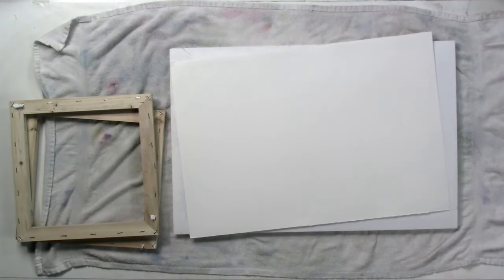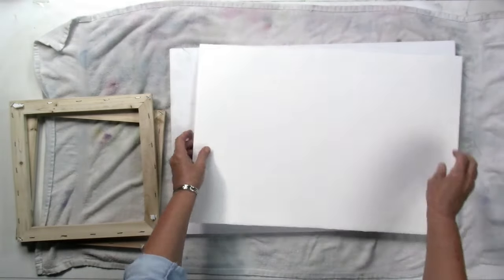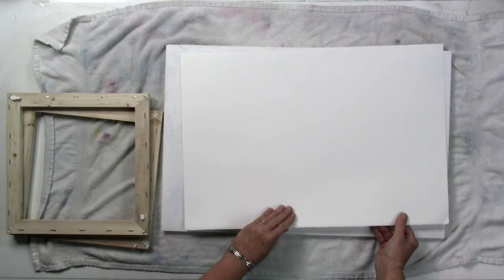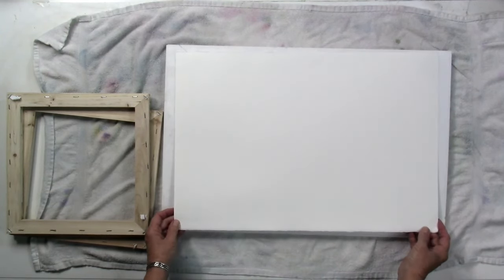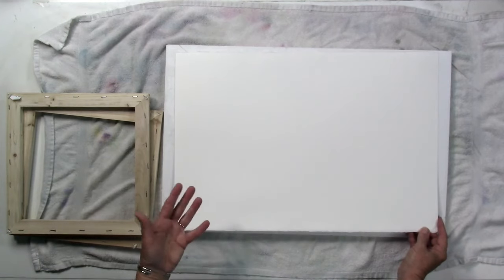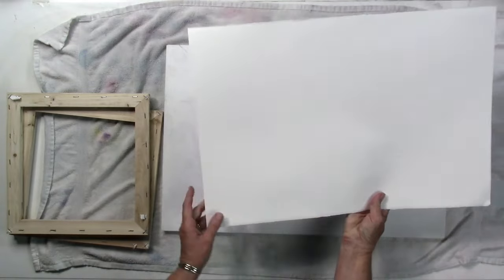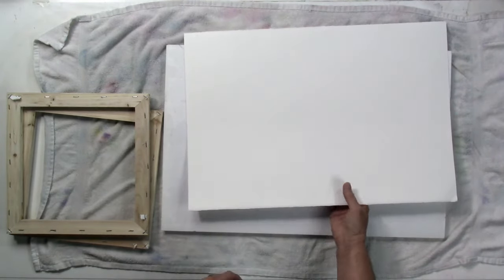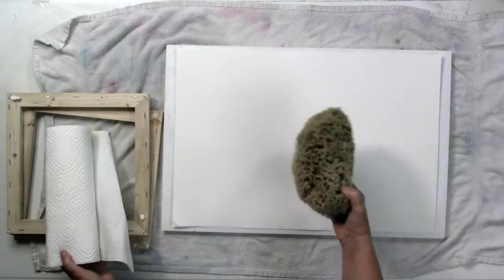I'll put my watercolor paper on top. Now this is 140-pound Fabriano paper, and I wanted to try this because it has a softer sized surface. I'm choosing the 140 because I want it to be a bit more pliable. So I'm going to look at what side of the paper I want to use. I'll probably use the top side here. Either side will work.